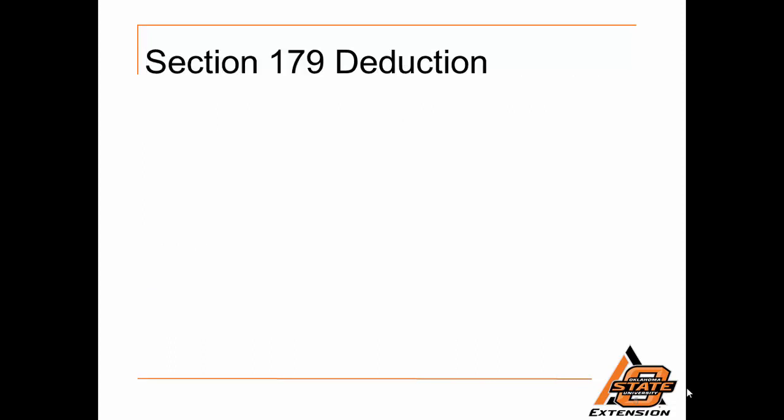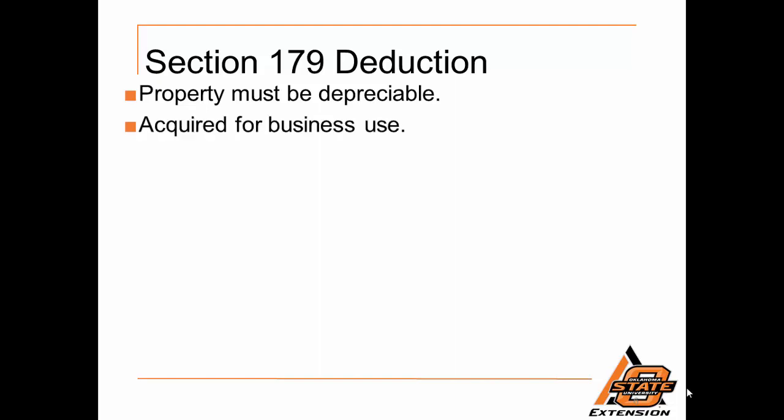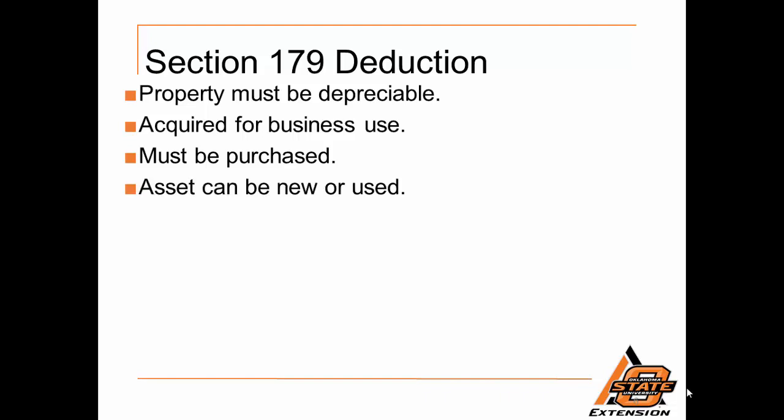For the Section 179 rules, the property has to be depreciable in order to be eligible. It must be required for business use and must be purchased, not leased. It can be either new or used — note that bonus depreciation requires new property, while Section 179 allows new or used.